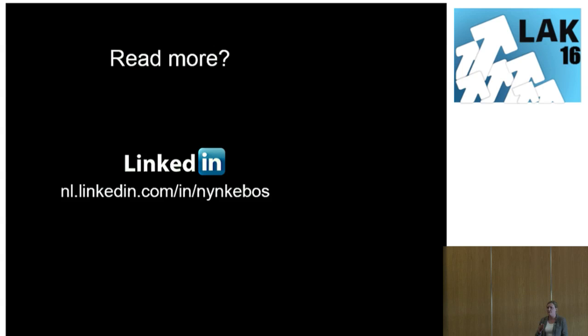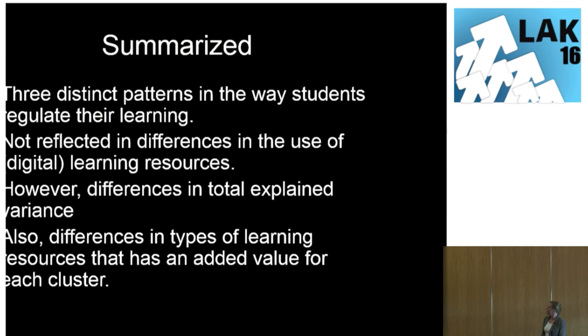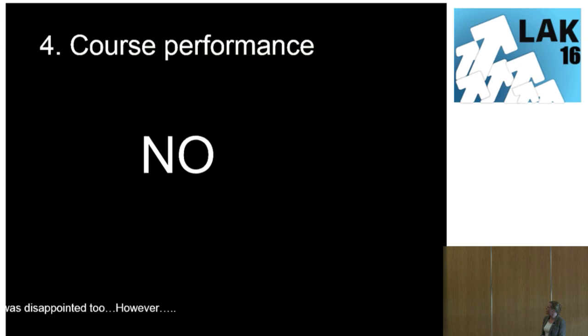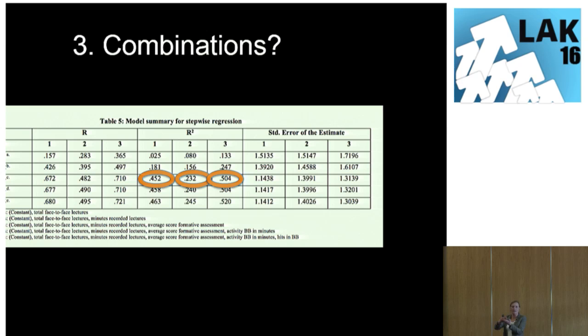One of your conclusions: the study confirms the low predictive value of LMS use on course performance. Isn't that more tied to the fact that there is no proper alignment between learning objectives, how you measure attainment, and the contents provided on the LMS? Could be. What has the biggest predictive value is those formative assessments, and they align really well with the final assessment. And basically within our LMS, there's not so much going on — just basically sending a lot of course content to the students. So that's true — the formative assessment has the best predictive value.